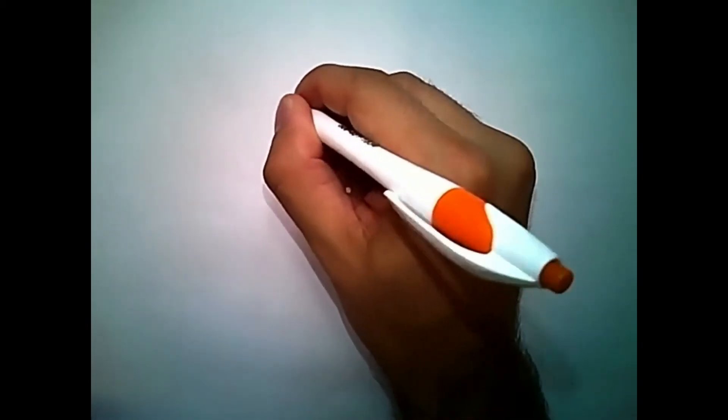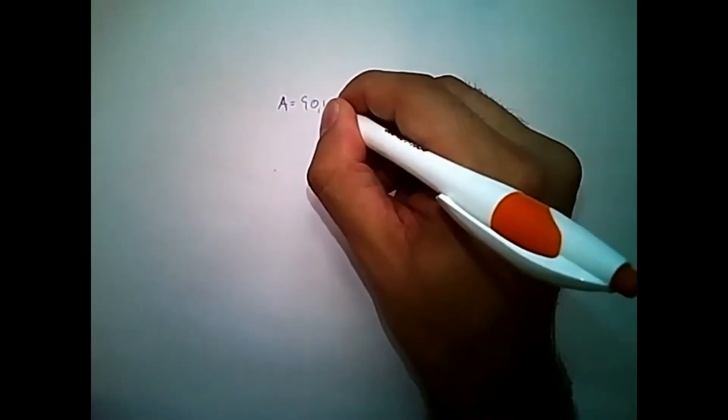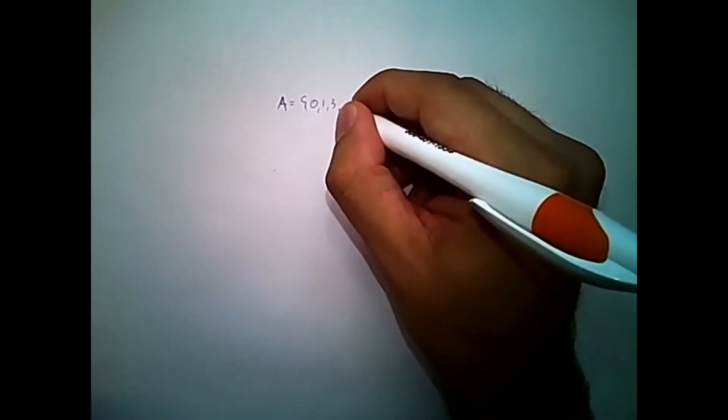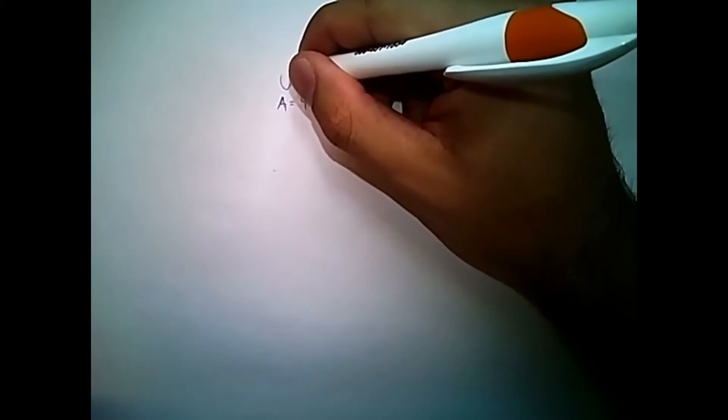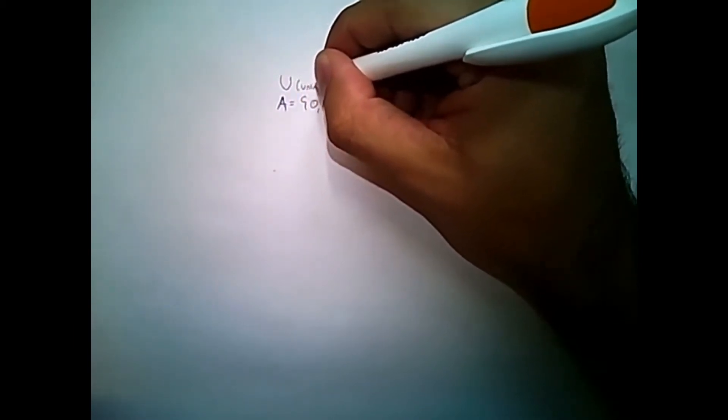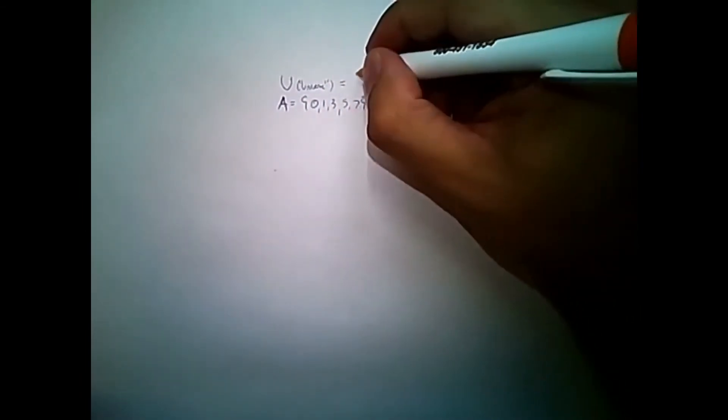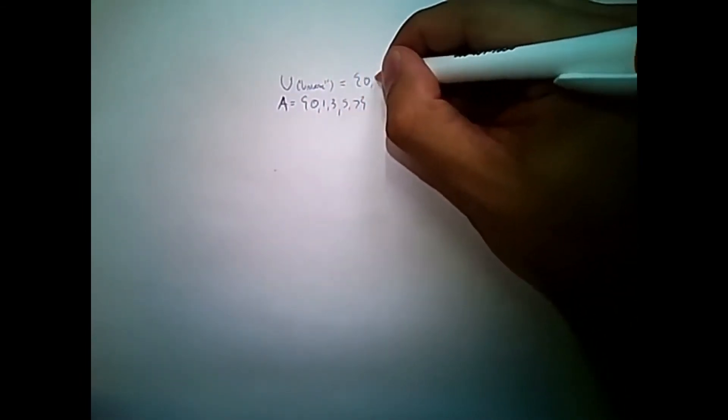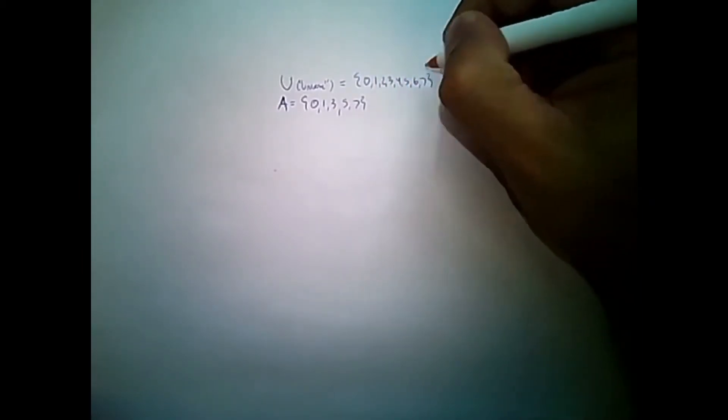So let's say I'm given the set A and it's equal to the items 0, 1, 3, 5, 7, just some numbers. And let's say my universe, which I'm going to draw a big U here for universe, is the set equal to the numbers 0, 1, 2, 3, 4, 5, 6, and 7. So 8 total items in my universe.